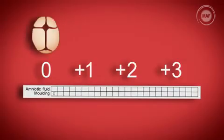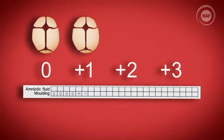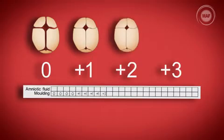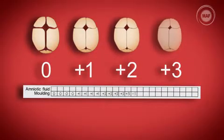0 denotes that the bones are separated and the sutures can be felt easily. Plus 1 denotes that the bones are just touching each other. Plus 2 denotes that the bones are overlapping but can be separated easily with pressure by your finger. Plus 3 denotes that the bones are overlapping but cannot be separated easily with pressure by your finger.